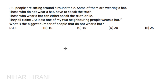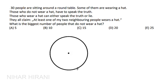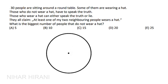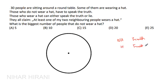Let us solve this one. There are 30 people sitting around a round table. Now some of them are wearing a hat. Those who do not wear a hat have to speak truth. Those who wear a hat can either speak truth or lie — so they have both the choices.